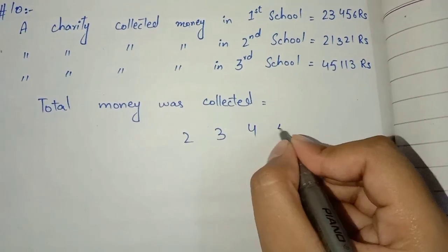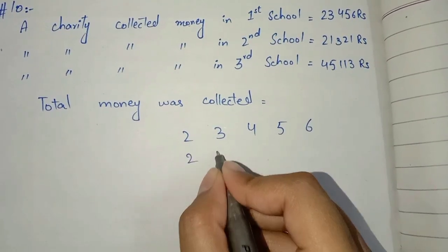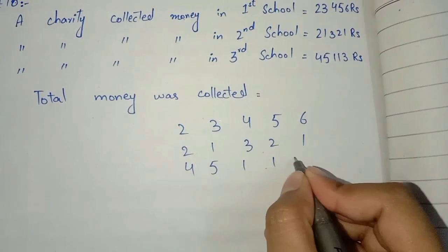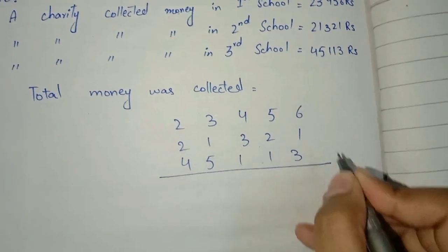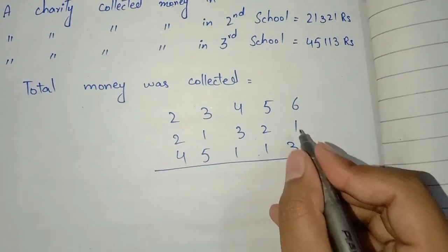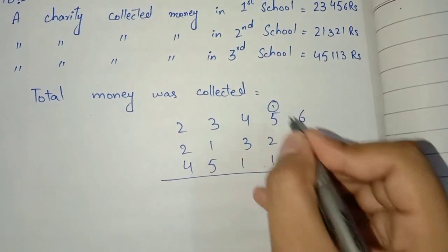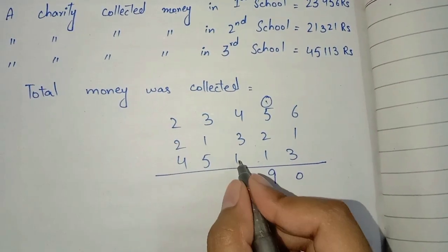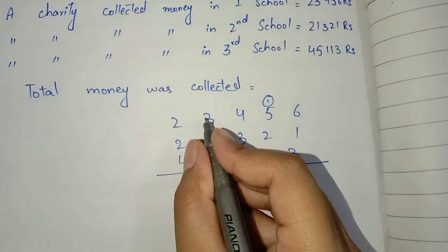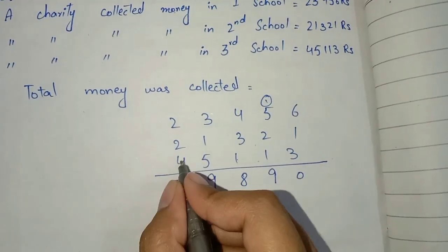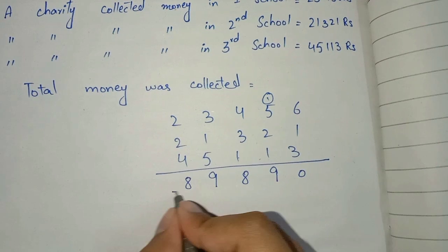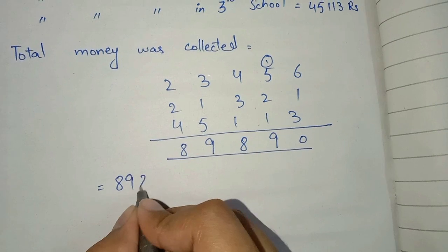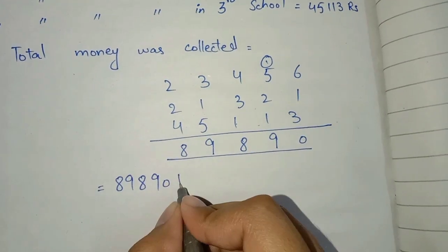In dono ko add kar lenge: 23,456 plus 21,321 plus 45,113. Adding column by column through ones, tens, hundreds, thousands, and ten-thousands. To total unke paas kitni money collect ho gayi — twenty nine thousand eight hundred ninety rupees.